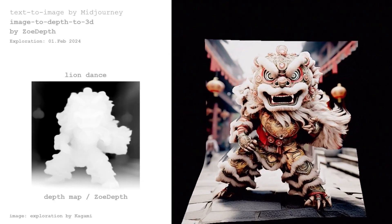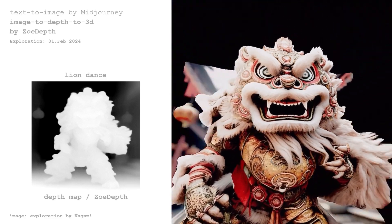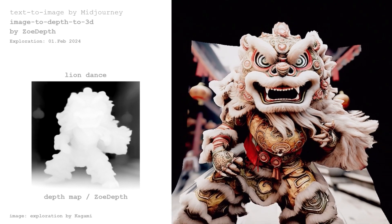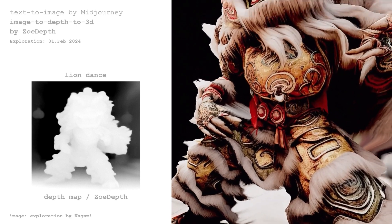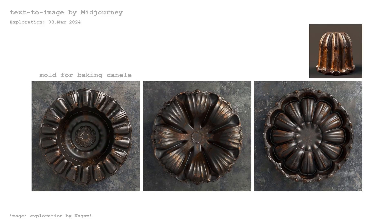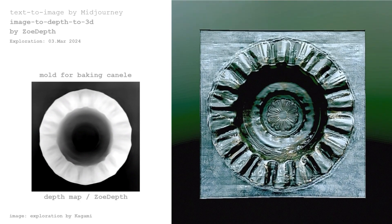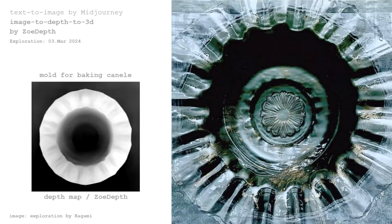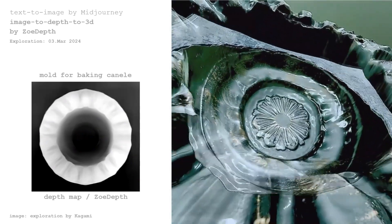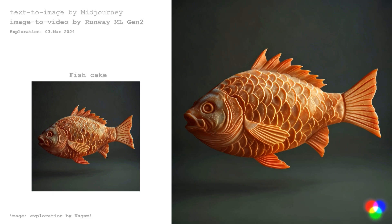AI depth estimation could also be useful for character design. This is a 'Lion Dance' experiment with ZoeDepth. The depth estimation is quite detailed, and with this method an extruded shape could be generated, making it suitable for creating molds. These are examples of molds for baking, where the image is generated with Midjourney and the 3D is generated with depth estimation by ZoeDepth. Here is another mold example — fish cake.